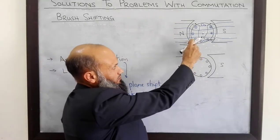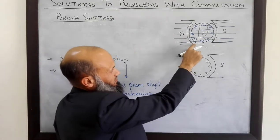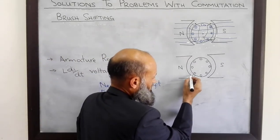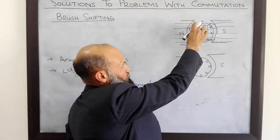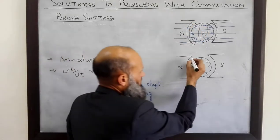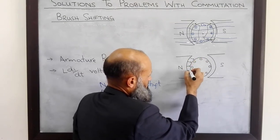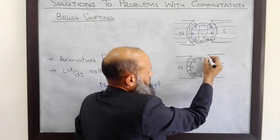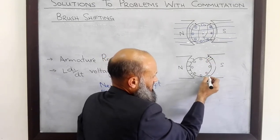At this end of the pole, the MMF due to current in these conductors and MMF of the main poles are in the same direction, so flux density at this end of the pole increases. At the other end of the pole, the MMF due to current in these coils and MMF due to the poles are in opposite directions, therefore flux density decreases at that end. The same applies at the other pole: flux density increases at one end and decreases at the other.